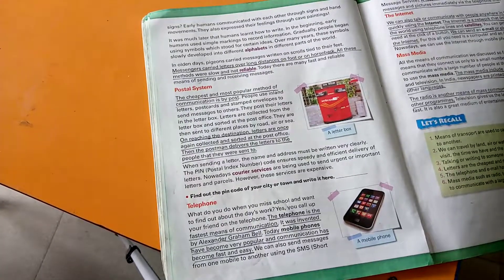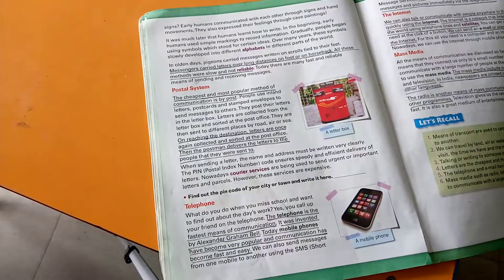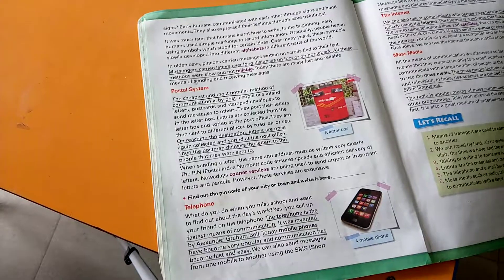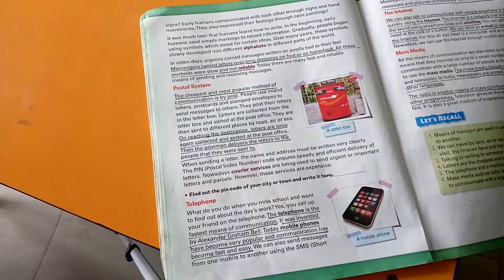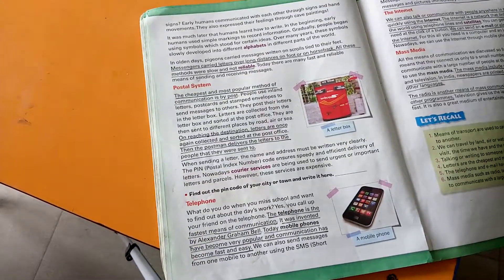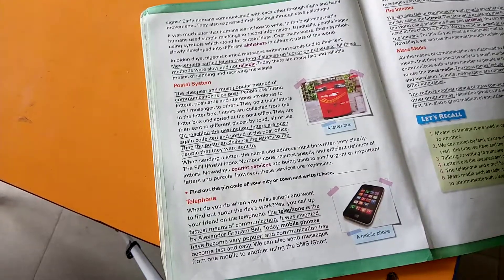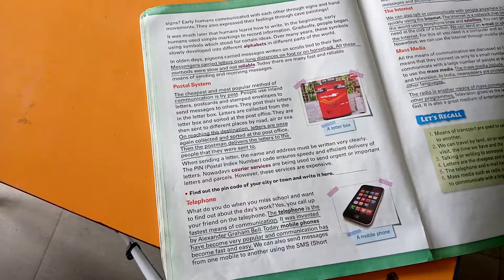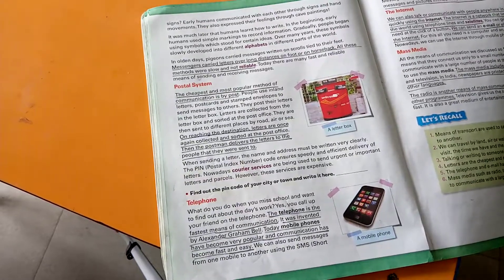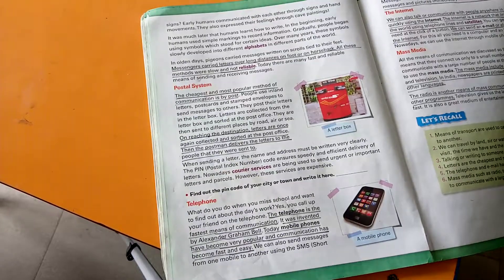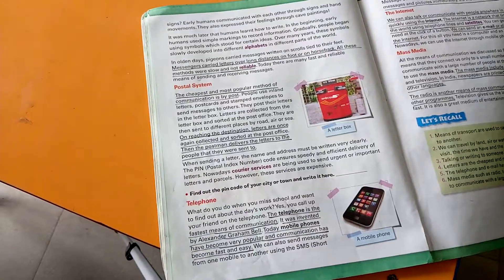In ancient times, pigeons were trained to carry messages from one place to another. Messengers were also used to carry messages from one place to another. But these methods were not reliable and were very slow. Nowadays, there are many fast and reliable means of sending and receiving messages.